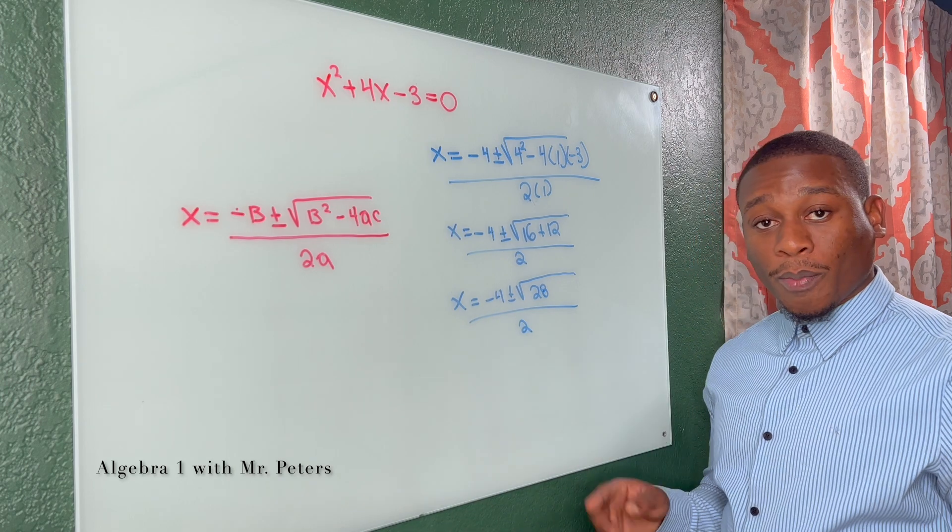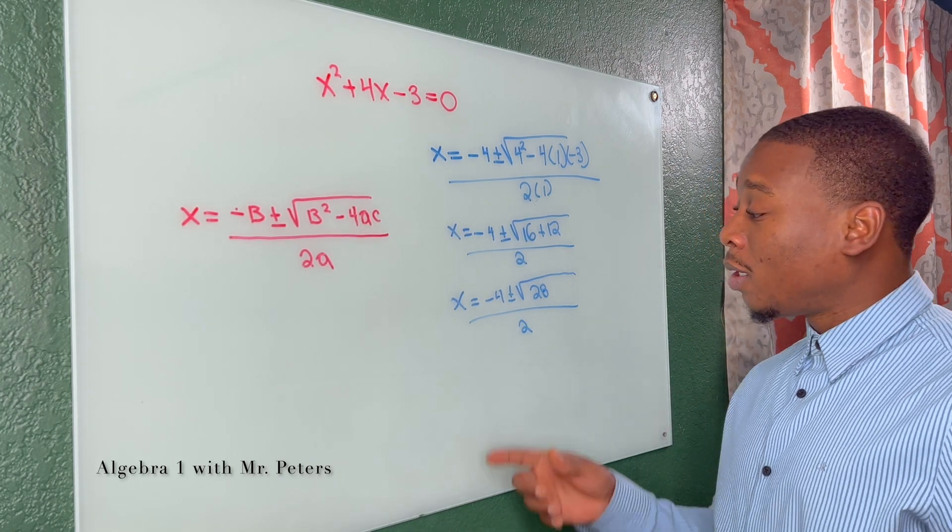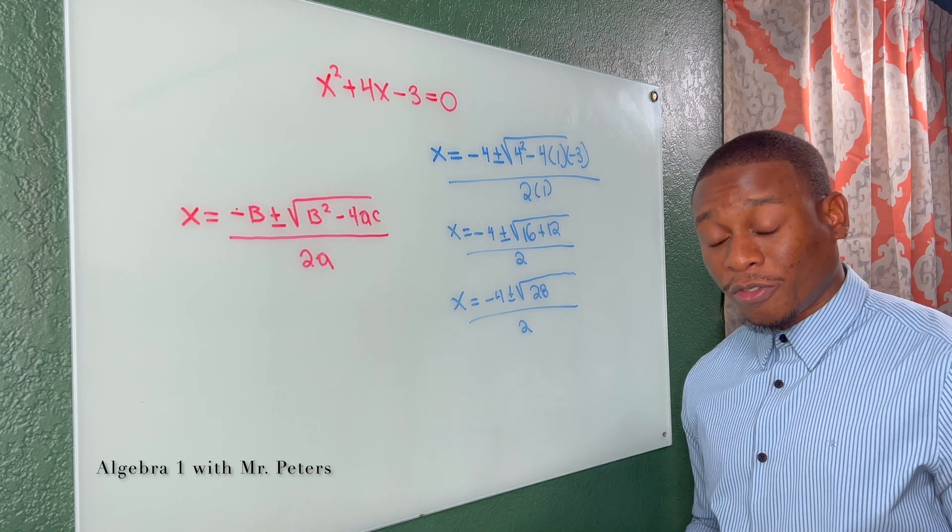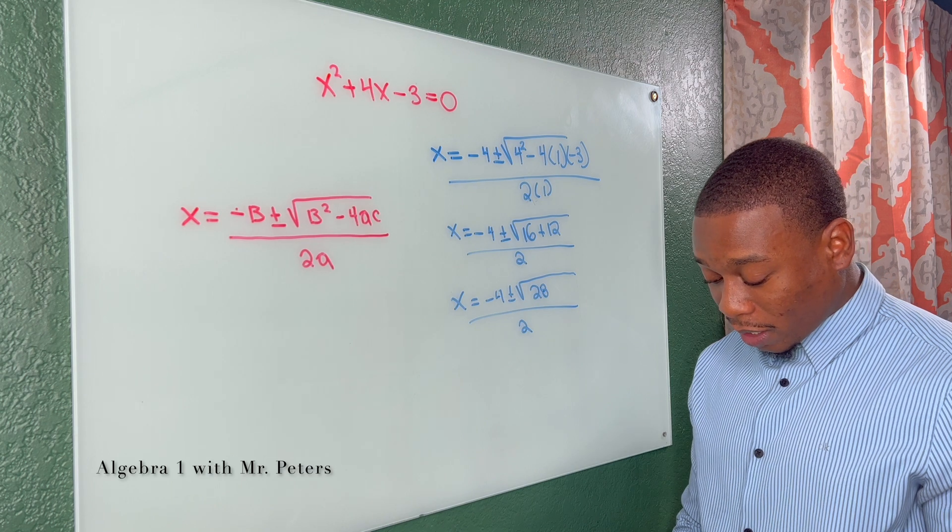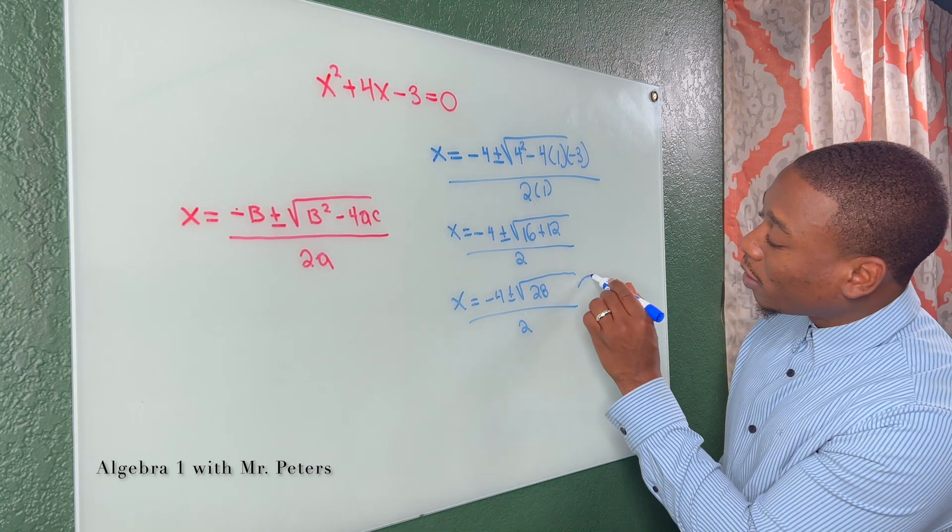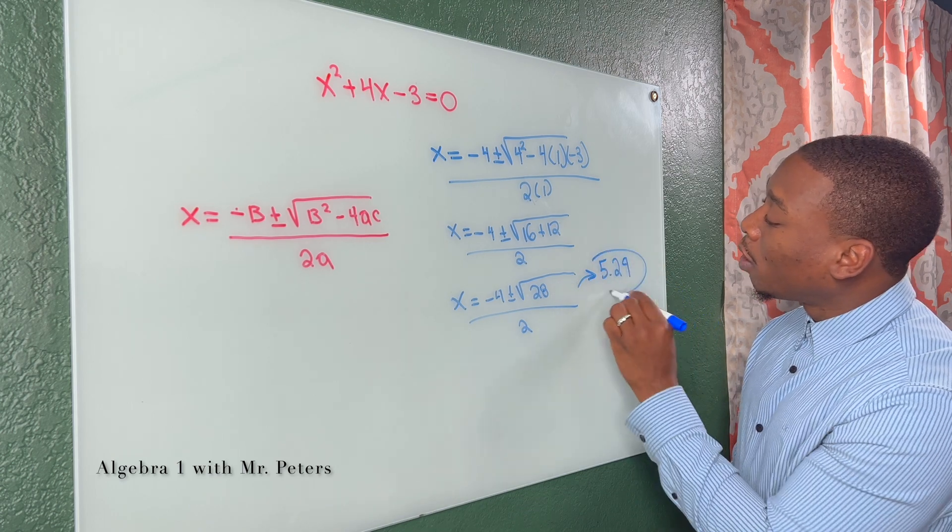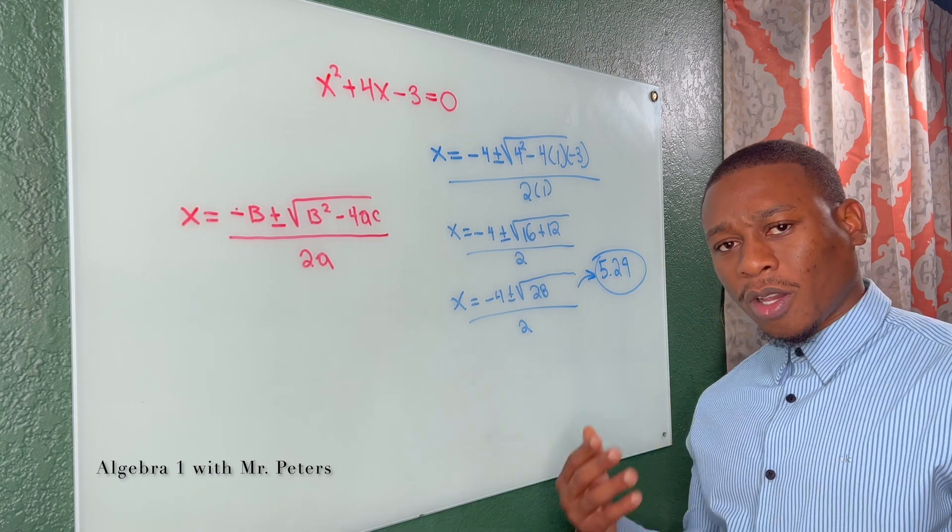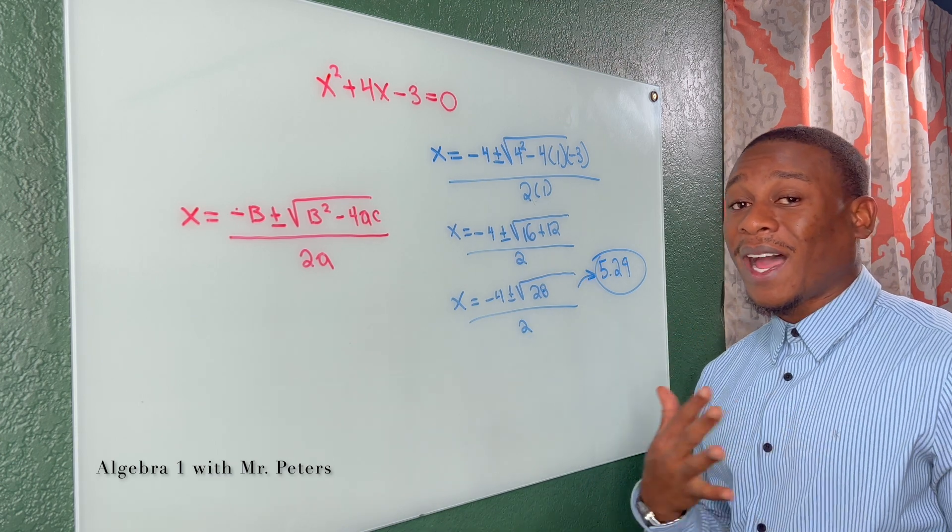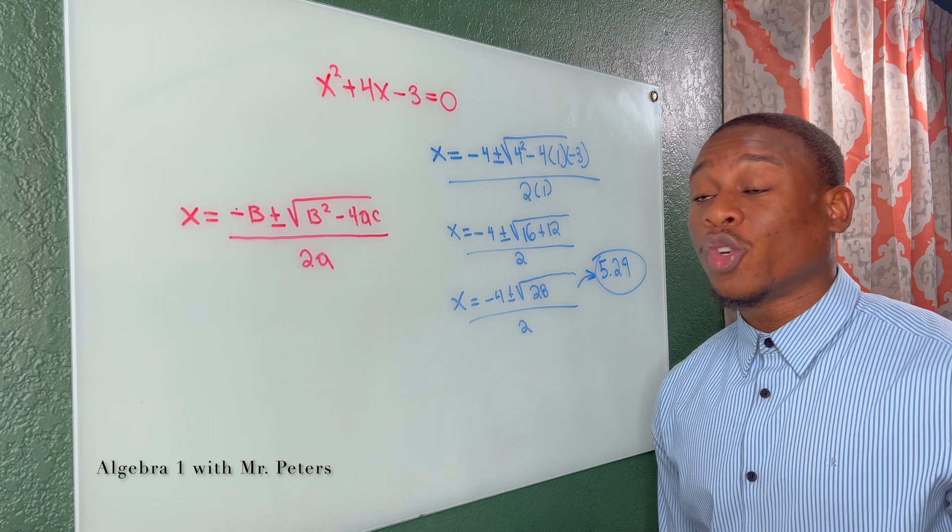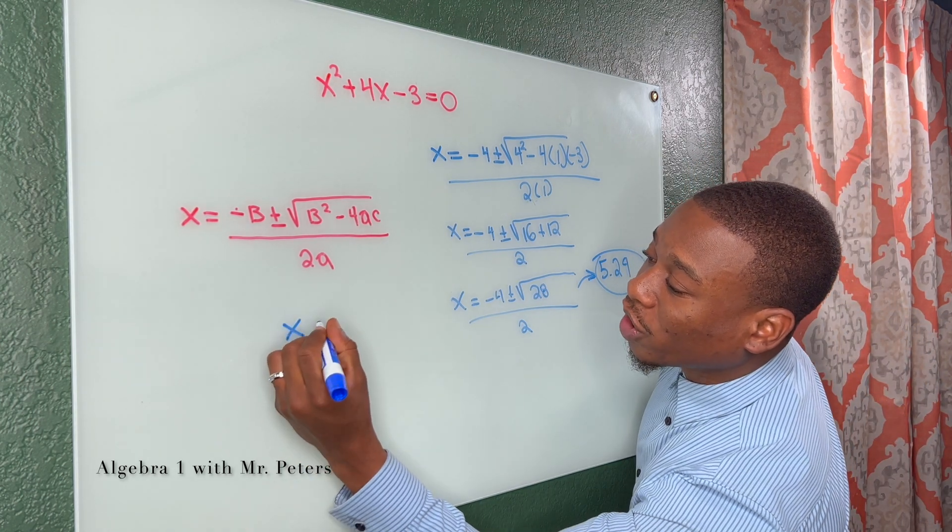So at this step, before we split the equations, I will tell you guys to use your calculator and figure out what is the decimal form. So when I go in and I put 28 and I hit that square root button, this is going to give me 5.29. Now please understand, this comes back to decimals and rounding. You could keep it like this, but Mr. Peters, I cannot stand decimals. So what I do is I round it to 5.3.